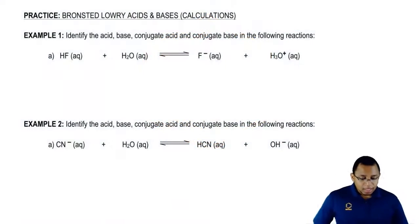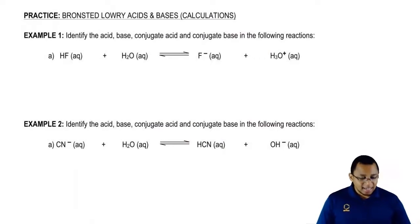Let's take a look at the first example. Here it says identify the acid, the base, the conjugate acid, and the conjugate base in the following reactions. Here we have HF aqueous plus H2O aqueous which gives us F minus aqueous plus H3O plus.